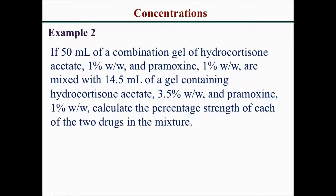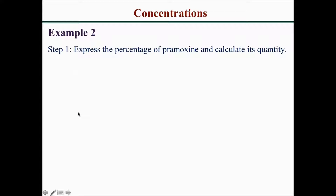For example two: if 50 mL of a combination gel of hydrocortisone acetate 1% w/w and pramoxine 1% w/w are mixed with 14.5 mL of a gel containing hydrocortisone 3.5% w/w and pramoxine 1% w/w, calculate the percentage strength of each of the two drugs in the mixture. Step one: express the percentage of pramoxine and calculate its quantity.